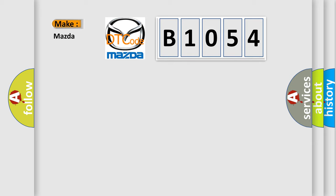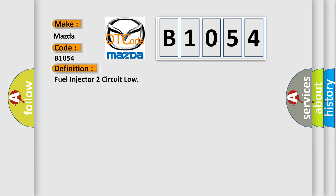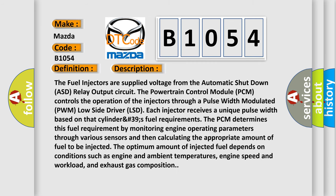What does the diagnostic trouble code B1054 interpret specifically for Mazda? The basic definition is: Fuel Injector 2 Circuit Low. The fuel injectors are supplied voltage from the Automatic Shutdown (ASD) relay output circuit. The Powertrain Control Module (PCM) controls the operation of the injectors through a pulse width modulated (PWM) low side driver (LSD). Each injector receives a unique pulse width based on that cylinder's fuel requirements.